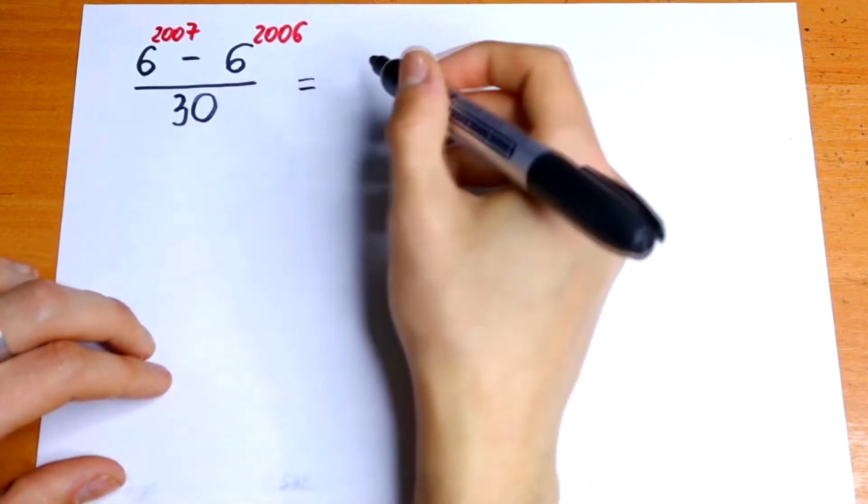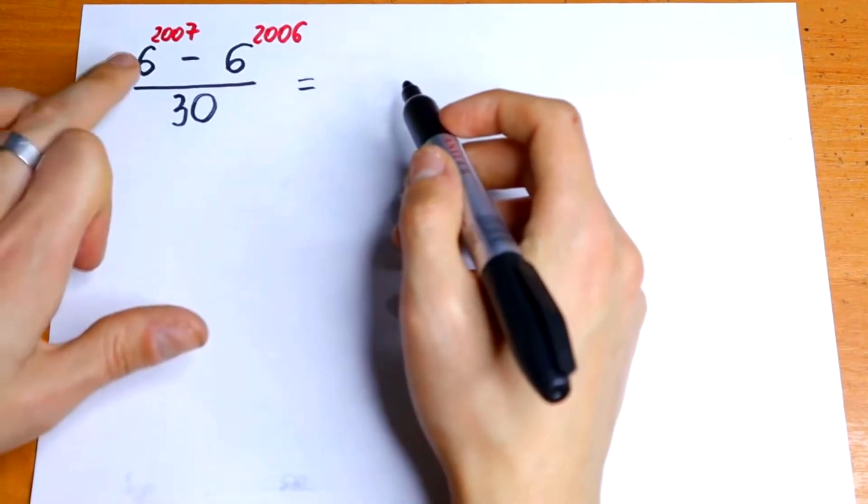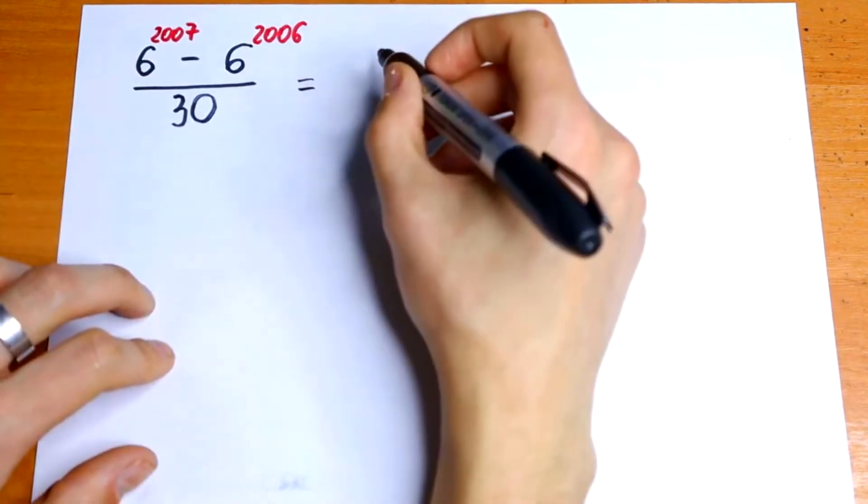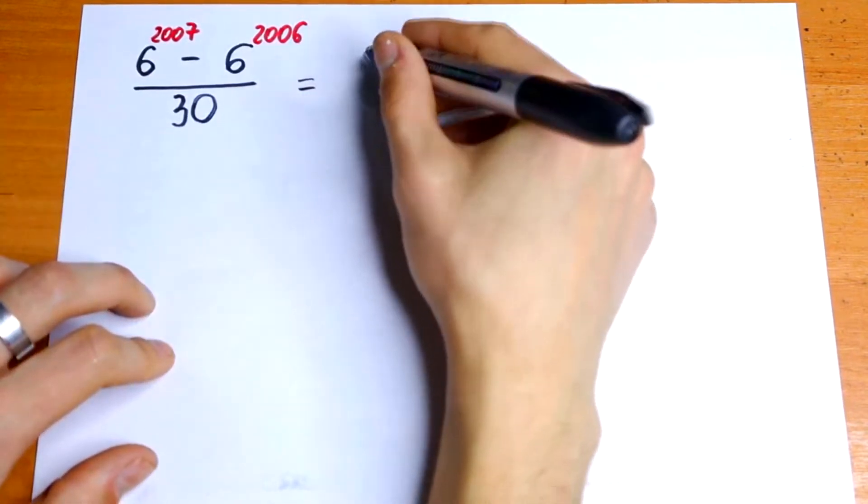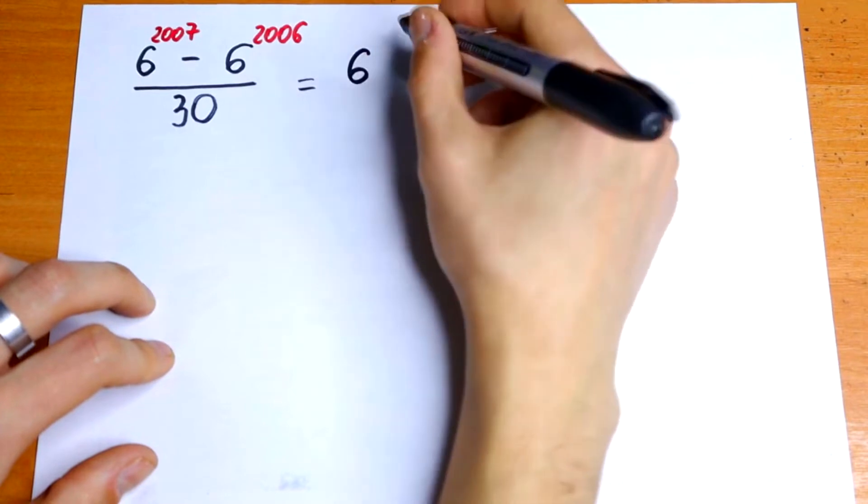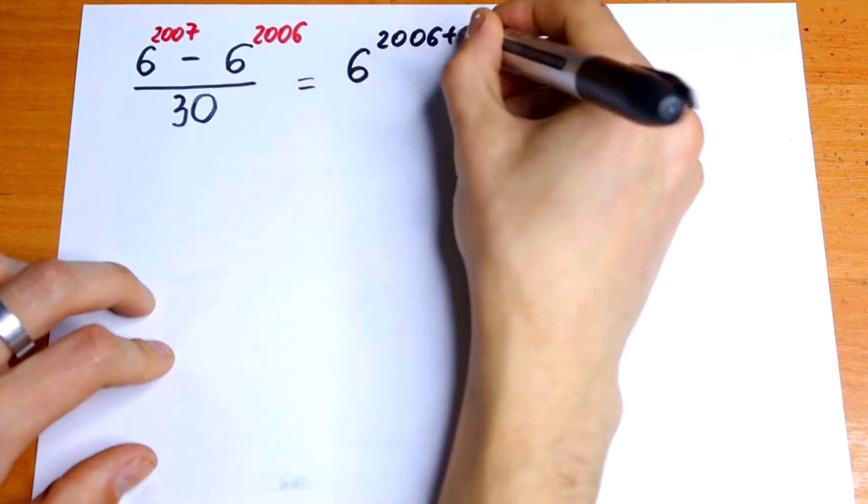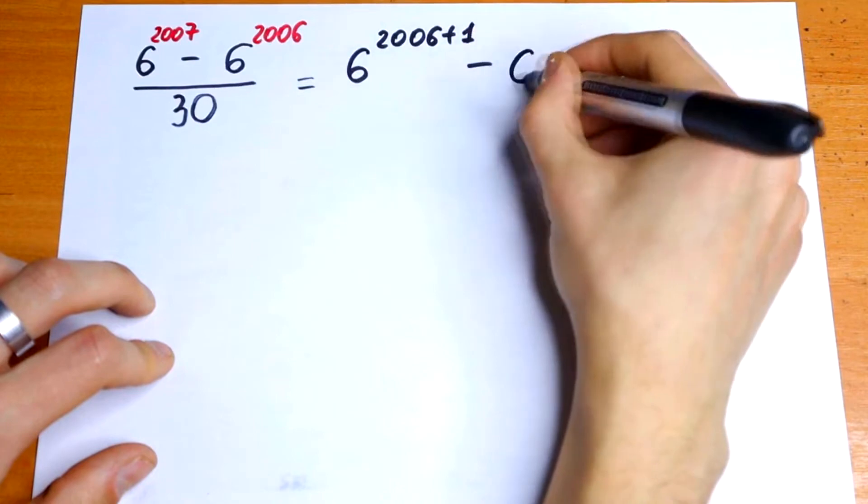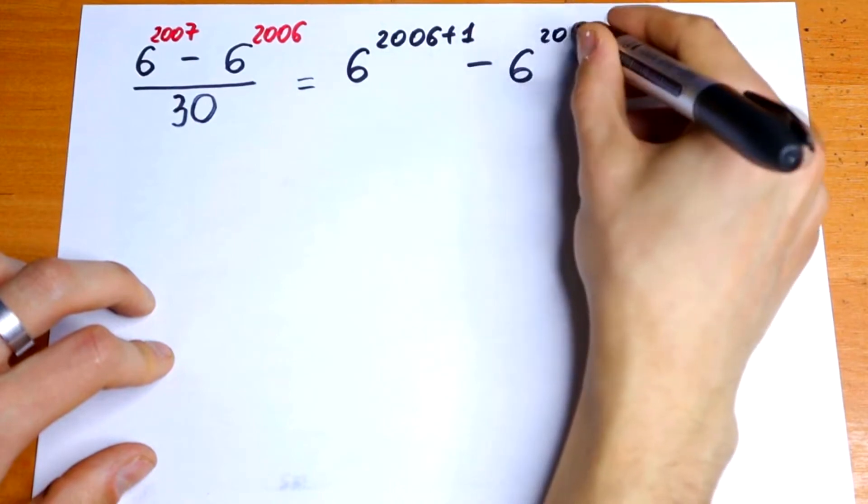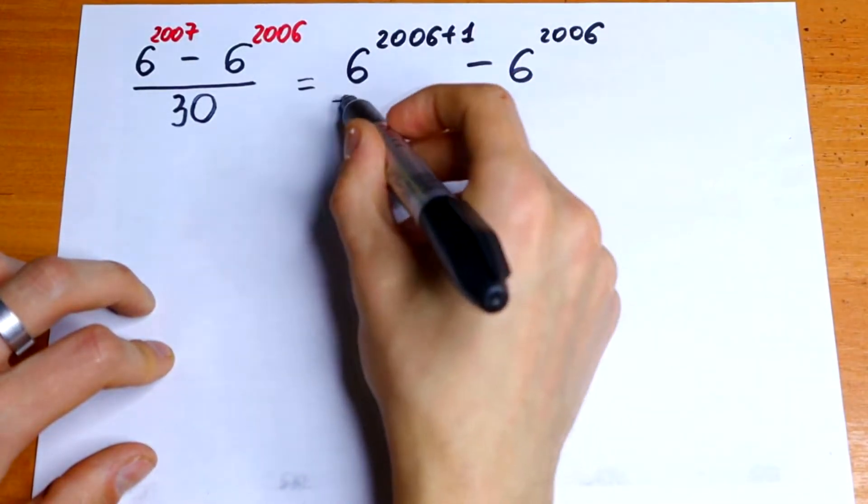So we need to use a little trick right here. We can write this 2007 as 2006 plus 1. So let's do this. We will have 6 to the 2006 power plus 1 and 6 minus 6 to the 2006 power over 30.